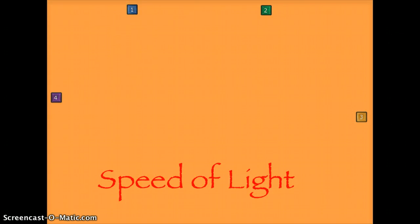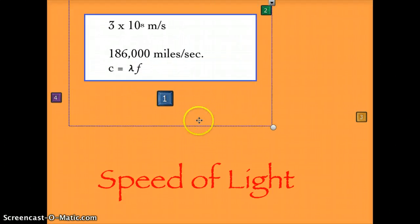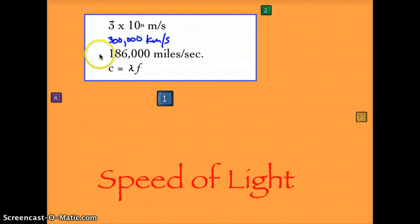Speed of light. The speed of light is 3 times 10 to the 8th meters per second. We did that in the last unit. That's 300,000 kilometers per second. And of course, that equals 186,000 miles per second.